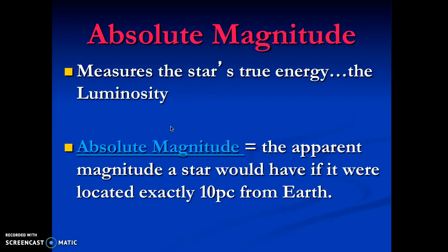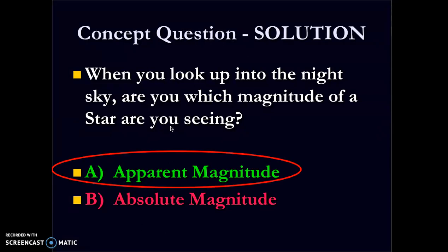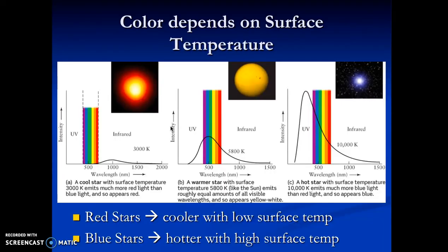Okay, so that's apparent brightness. But once we factor in the distance, we then can measure the star's true energy, the luminosity, which gives us the absolute magnitude. So it's the apparent magnitude a star would have if it were located at exactly 10 parsecs from Earth. Seeing that if we put all the stars at the same distance, we'd be able to figure out the absolute magnitude. So in that case, if we know the apparent magnitude and the distance, we are able to figure out the absolute magnitude. Okay, so when you look at the night sky, are you viewing apparent magnitude or absolute magnitude? Apparent! It's only how bright it appears to be. The absolute magnitude is how bright it actually is. The apparent magnitude depends on distance.